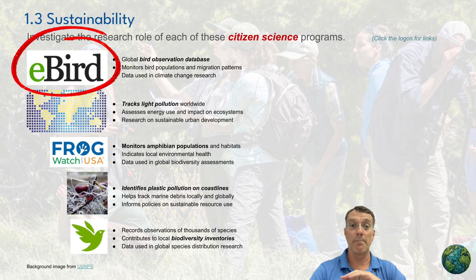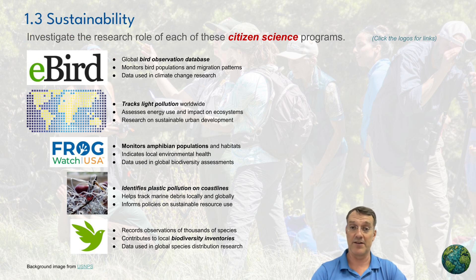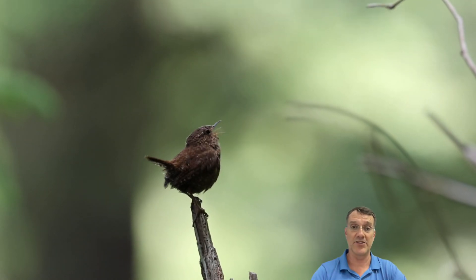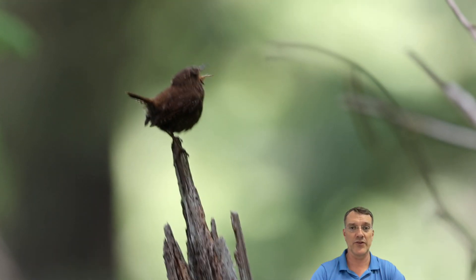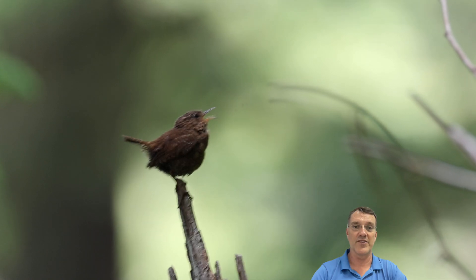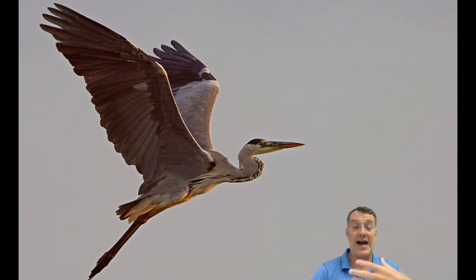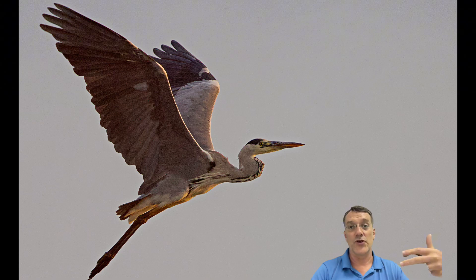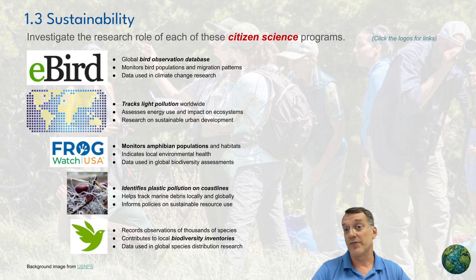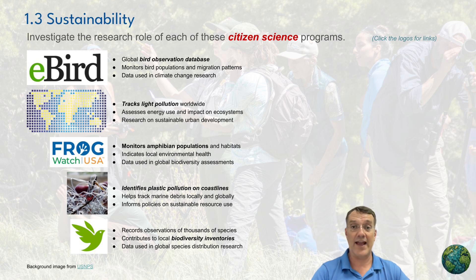eBird is a global bird observation database that helps monitor bird populations and migration patterns. It's the largest bird database in the world, run out of Cornell University in New York. Researchers use the observations and bird sightings that people submit every day to track biodiversity and bird migration patterns around the world.